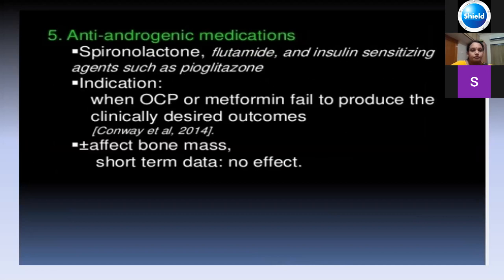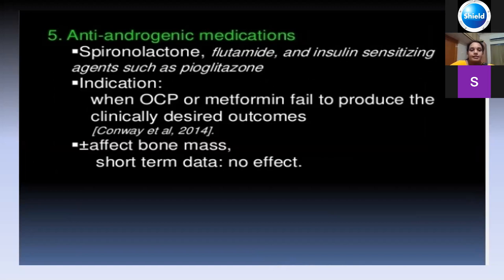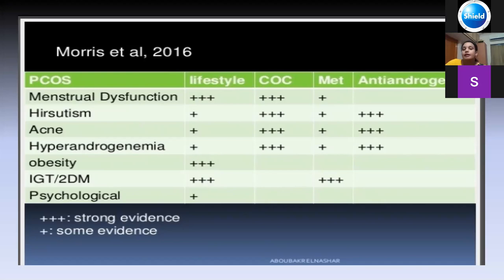Anti-androgenic medications are used in those with really bad acne or severe hirsutism — agents like spironolactone, flutamide, and insulin-sensitizing agents like pioglitazone. A summary table shows: menstrual dysfunction is best controlled by lifestyle modification and combined OCP; hirsutism by combined OCP; acne by combined OCP and anti-androgens; hyperandrogenemia by combined OCP and anti-androgens; and insulin resistance best by metformin.